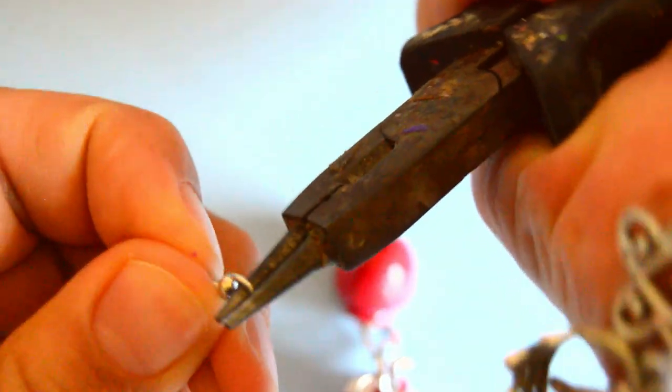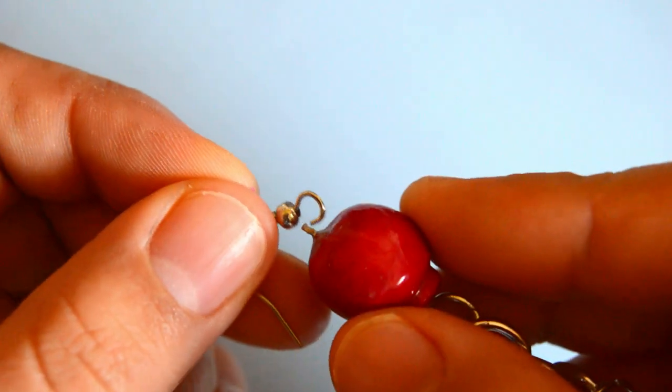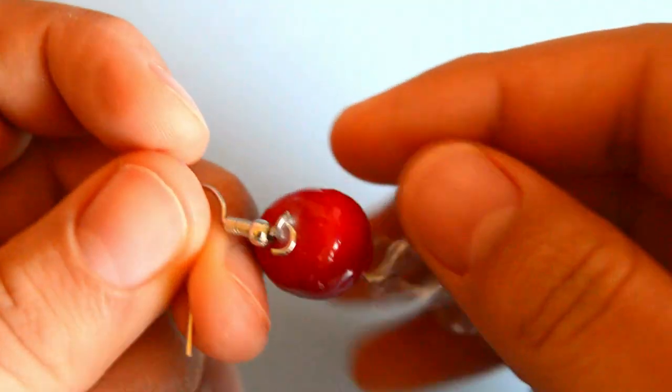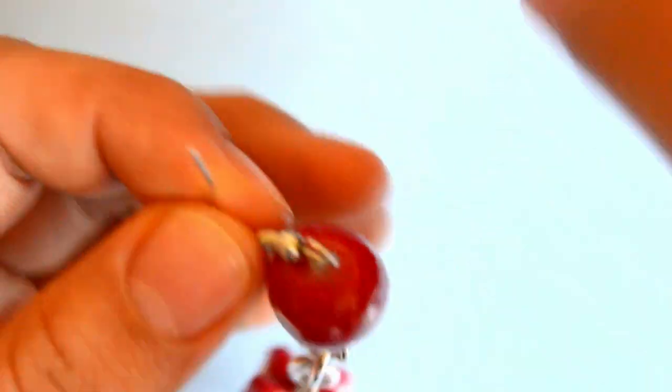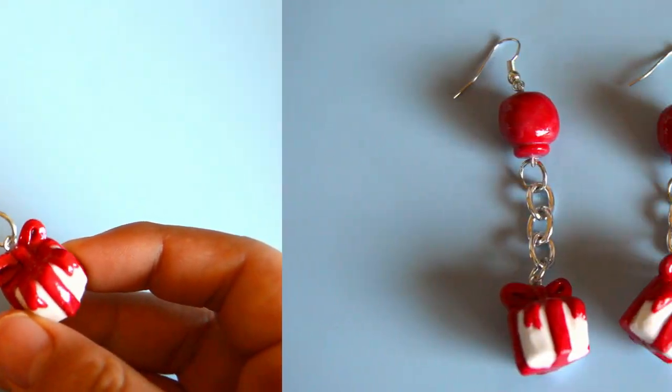Now you just want to use your pliers to open the bottom of the earring hook and place your balloon charm onto that hook. And then you just want to close the hook by using your pliers again. Then you just repeat this process one last time, and then you are all done with your earrings.